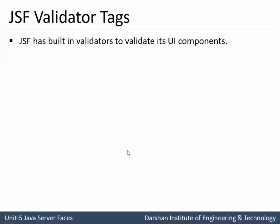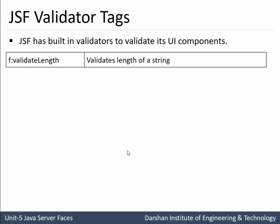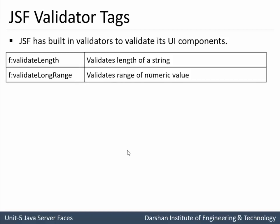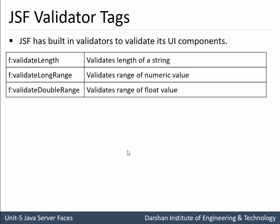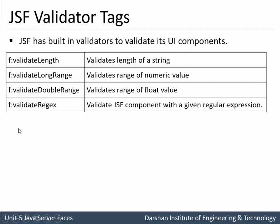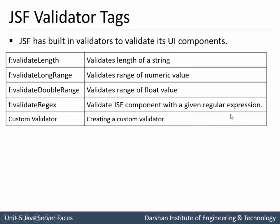JSF has built-in validators to validate UI components. The first is f:validateLength — this tag validates the length. For example, if the password length is set to 8 and the user enters a password of 10 characters, f:validateLength will invalidate that UI component. Then f:validateLongRange validates the range of numeric values, f:validateDoubleRange validates float values, and f:validateRegex validates a JSF component against a given regular expression. We can also create our own custom validator using the JSF validator tags library.